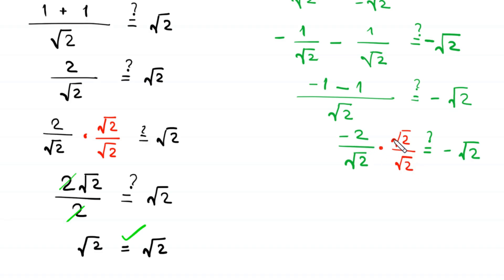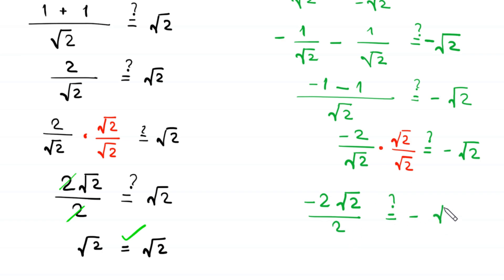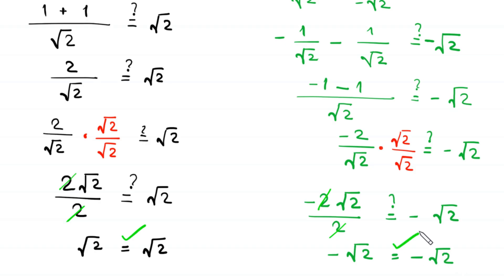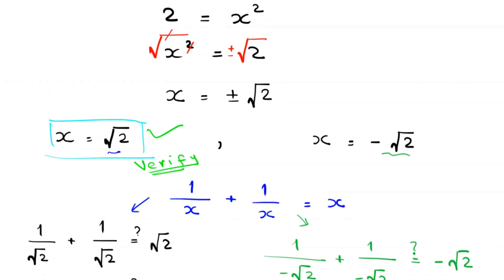To rationalize the denominator, we multiply and divide by root 2. So negative 2 times root 2 divided by root 2 times root 2 gives us negative 2 root 2 divided by 2. The 2 cancels out, leaving negative root 2 is equal to negative root 2. The left hand side equals the right hand side, confirming that negative root 2 is also a valid solution.